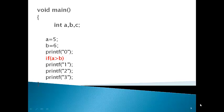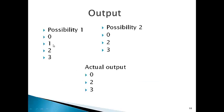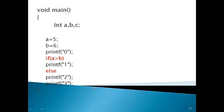Now we evaluate the condition: a is 5, b is 6, so 5 > 6 is false. Since the condition is false, the if body (print 1) will not execute. So the output will be 0, 2, and 3. Let's check — yes, the actual answer is 0, 2, and 3, because the condition is false.